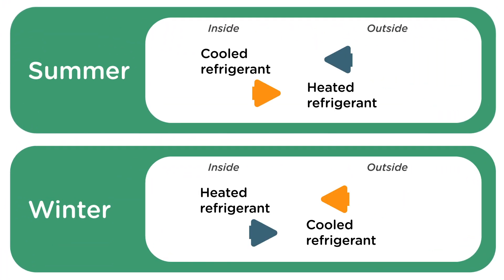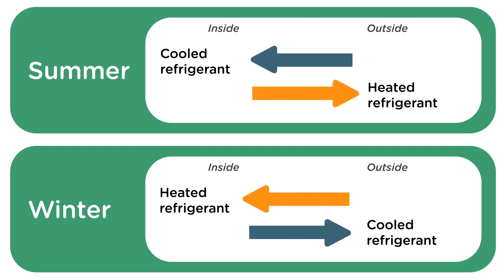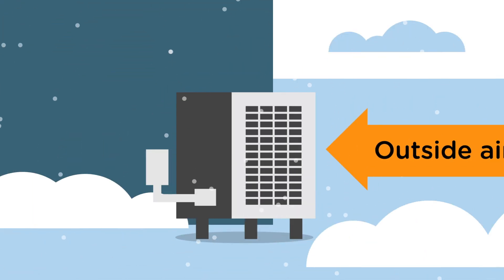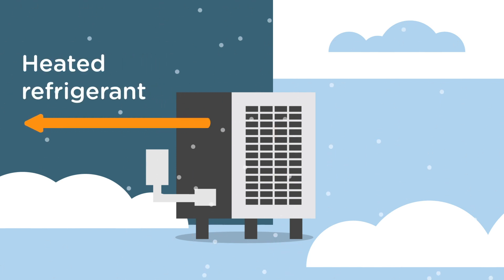During the winter, the process and the roles of the indoor and outdoor coils are reversed. Now the outdoor coil acts as an evaporator and allows the refrigerant to absorb heat from outside the air.